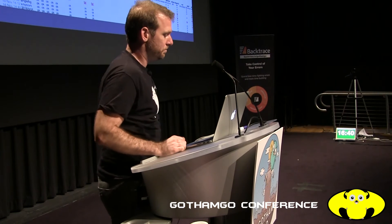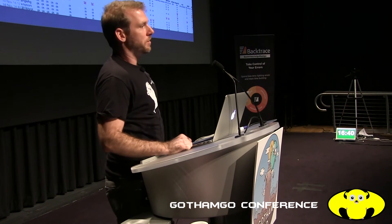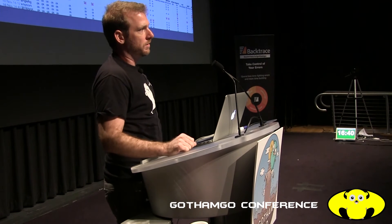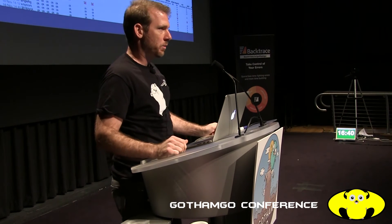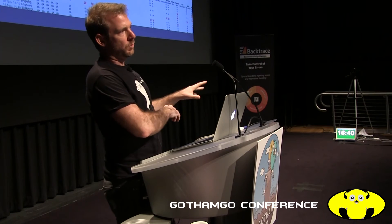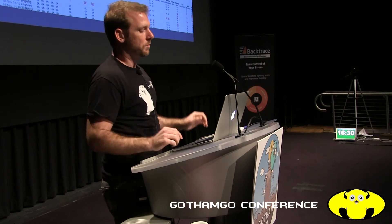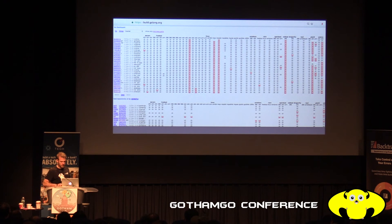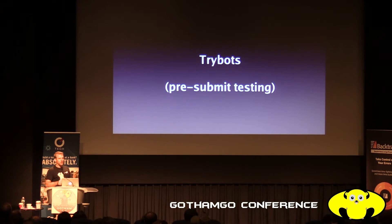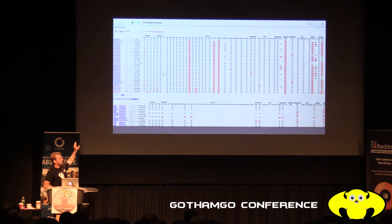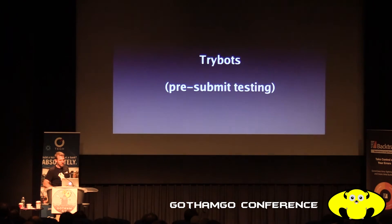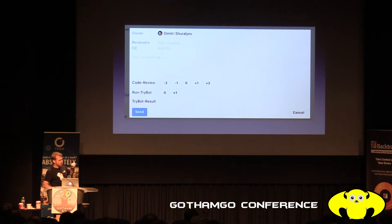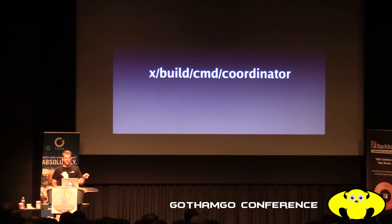Why don't we just use Travis? Because it doesn't support a lot of these architectures. We also shard our test results so we can get all tests done in five minutes even though the full test suite might take an hour — we cross-compile on one machine and shard the tests out. Travis is getting better, but we already have this system, it's written in Go, and it's easy for us to understand. The trybots are our pre-submit testing; build.golang.org is our post-submit view.